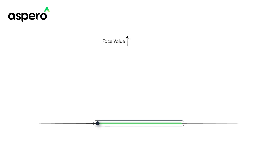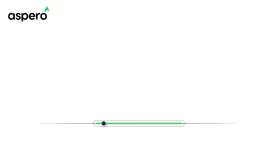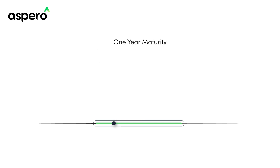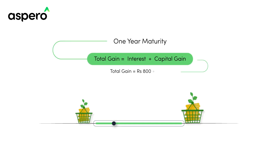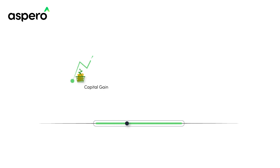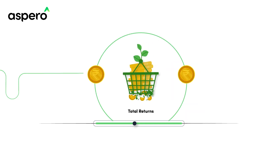Let's illustrate this with the same example. Let's say you bought the bond at a discounted price of Rs 9,000, lower than the face value. Now at maturity, you will receive the bond's full face value of Rs 10,000, resulting in a capital gain of Rs 1,000. Assuming the bond matures in one year, your total gain would be Rs 1,800, and hence your YTM would be 18%. This capital gain is an additional benefit on top of the annual interest payments you'll receive, and it affects the YTM and contributes to your total return.